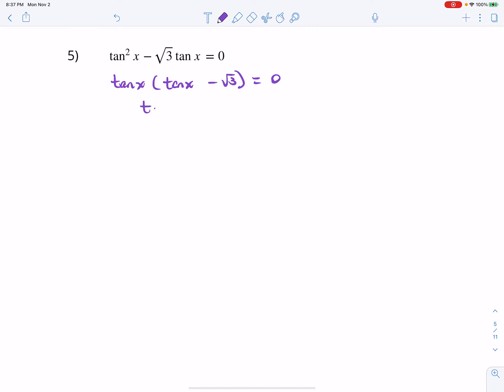So, we can set each factor equal to zero. And it looks like the one on the right gives us tangent x equals root 3. Now, one thing at a time.